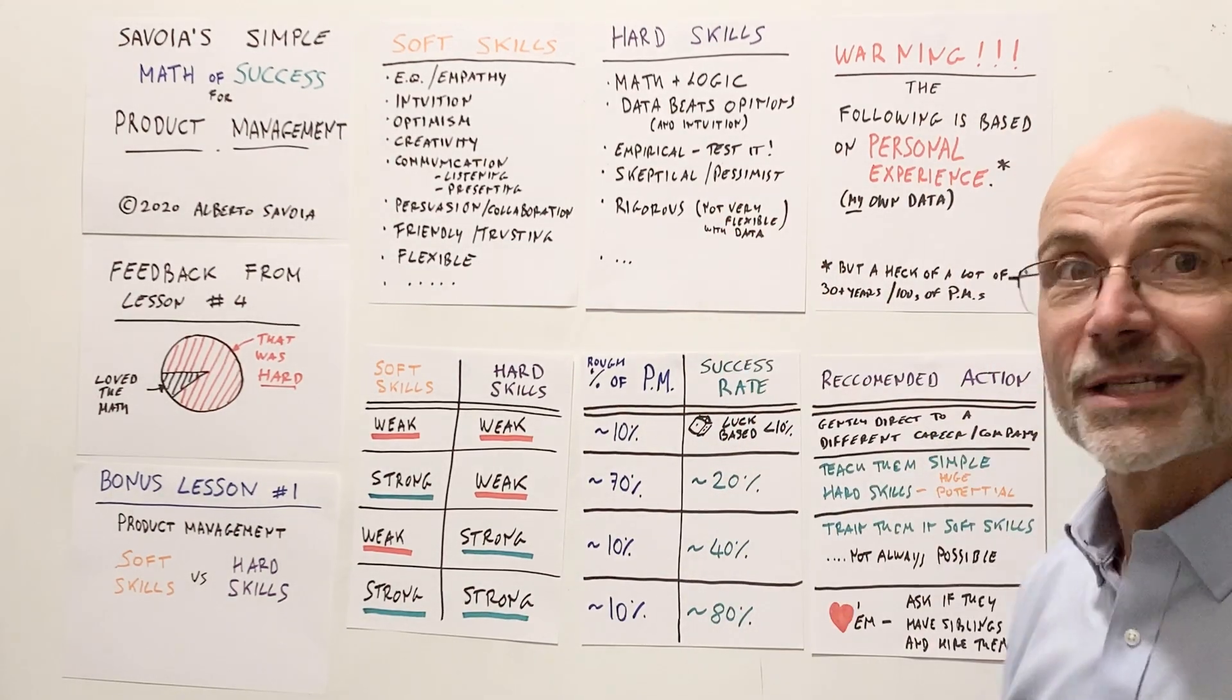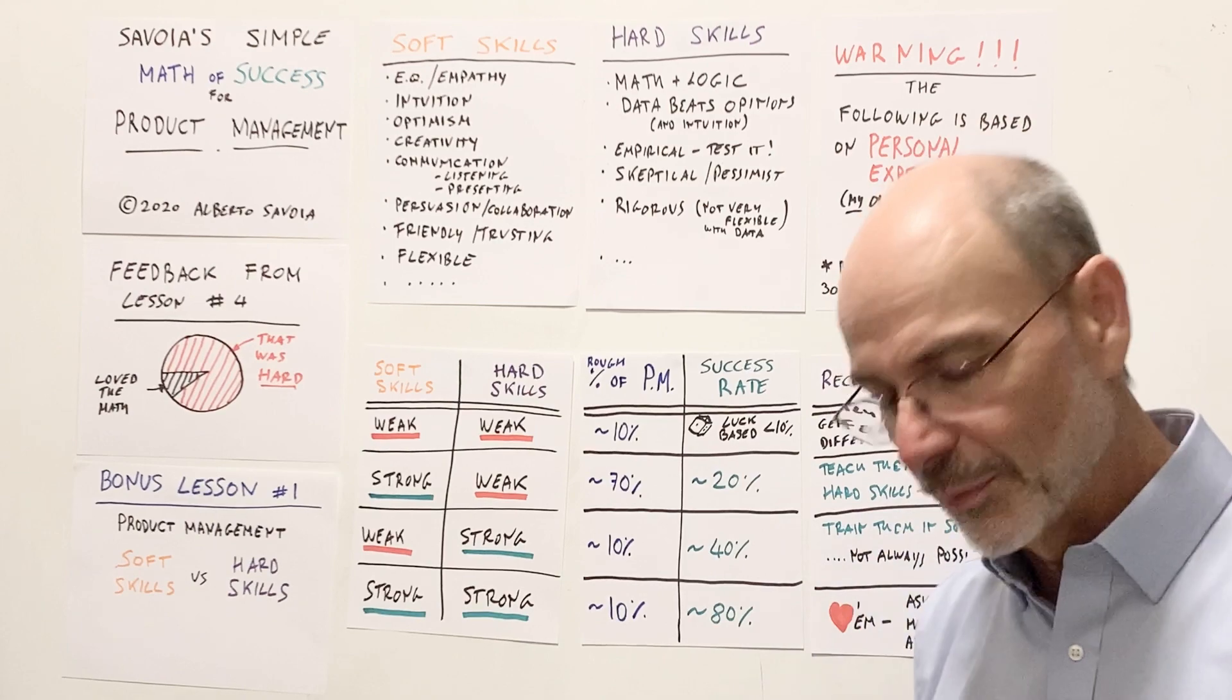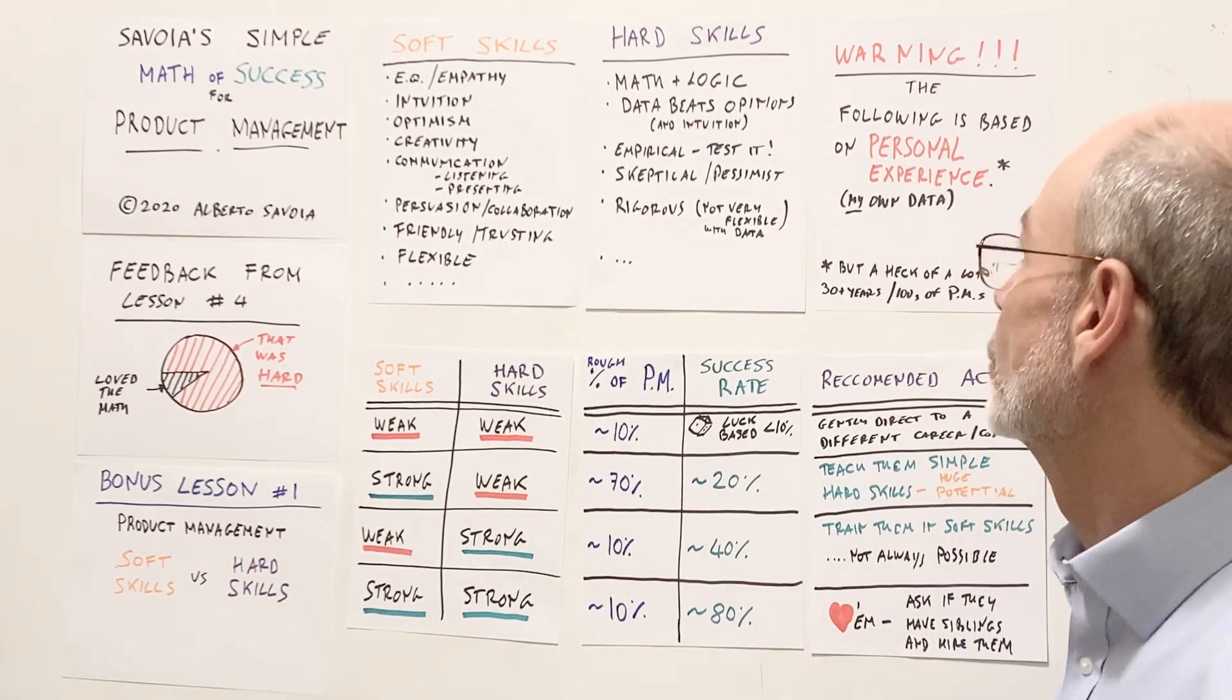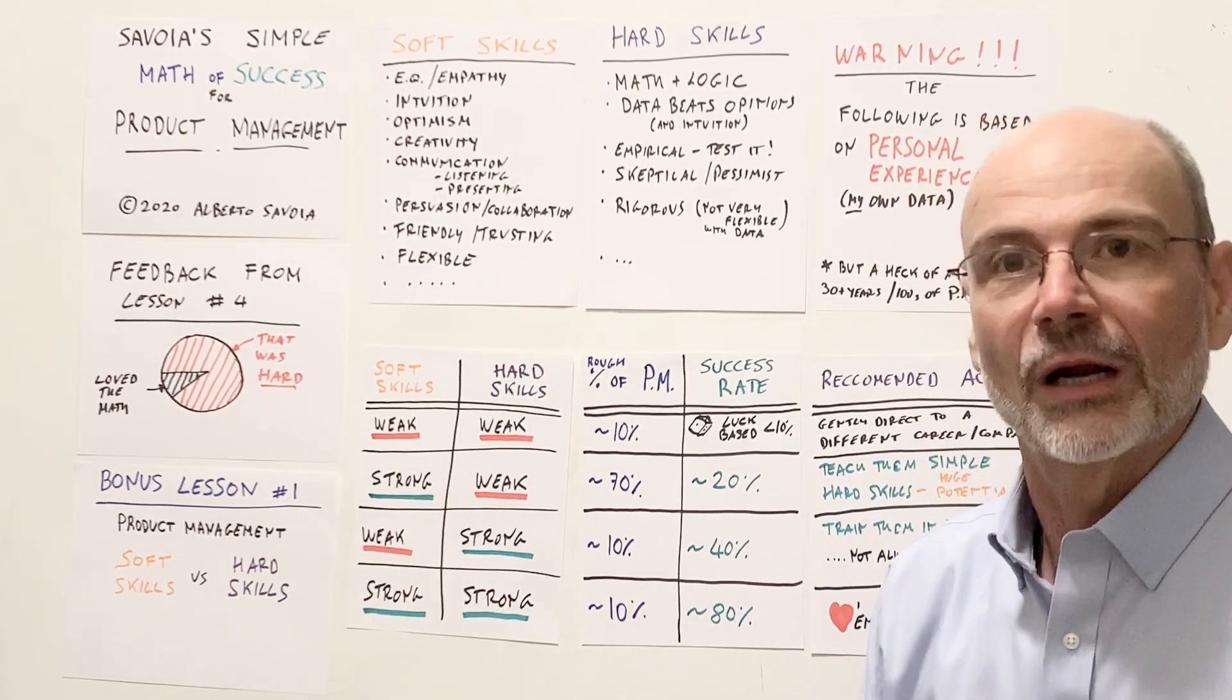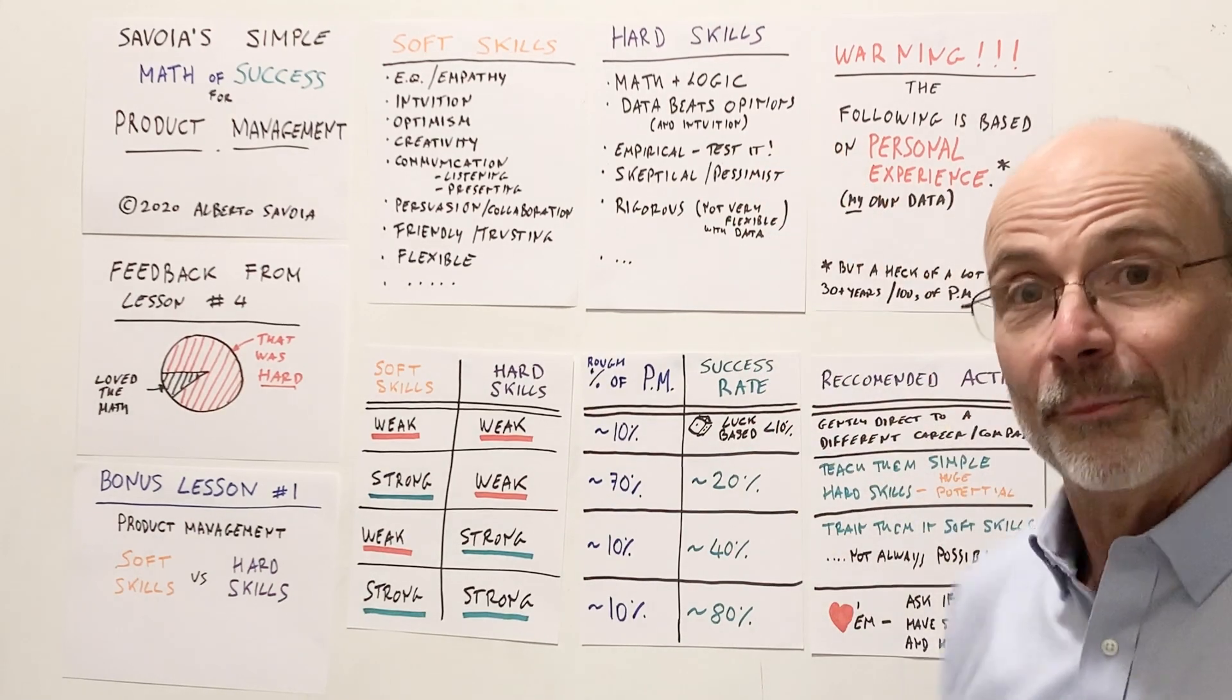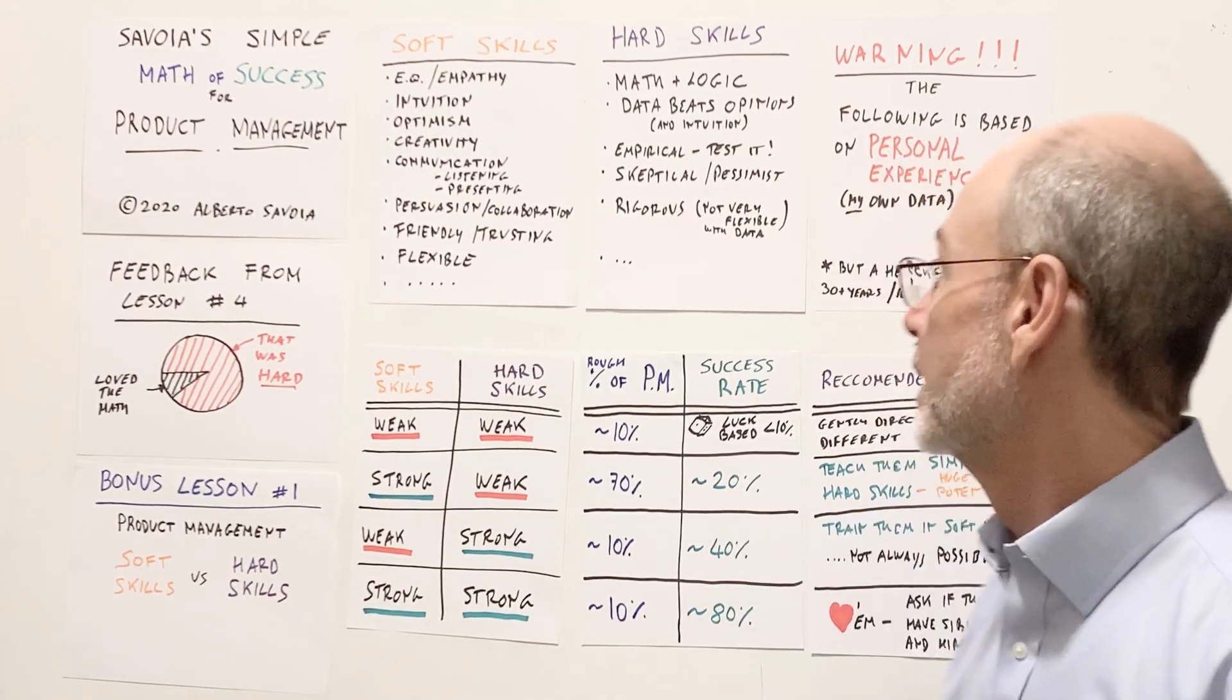Now, for the hard skills, well, as you might expect, this is not a complete list by any means. It's math and logic. These are people that put a lot of trust in math and logic more than on people and feeling and intuition. They believe that data beats opinion. You can tell me what you think, but I want to see the data. I want to see some skin in the game. Don't tell me what you will do. I want to see you doing it. So they're very skeptical in that. They're empirical. They want to test things. So they believe that the best way to approach a problem is to start with a hypothesis and to test that hypothesis.